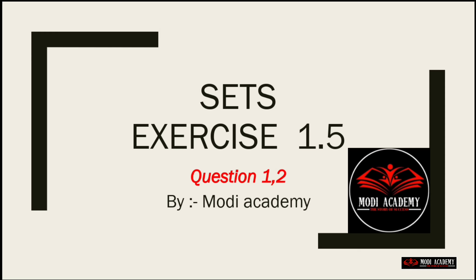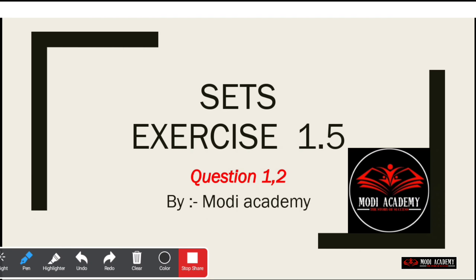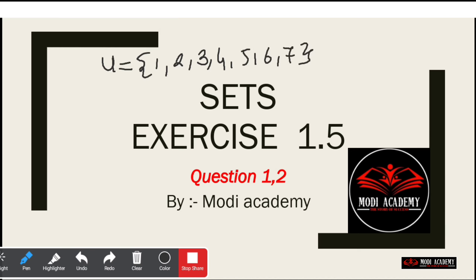What happens when we have a complement? Question number 1 and question number 2 both are dependent on the complement of the set. I take a simple example: my universal set has elements 1, 2, 3, 4, 5, 6, and 7. Suppose I have 7 elements and my set A is all the even numbers — it means 2, 4, 6, only 3 elements.